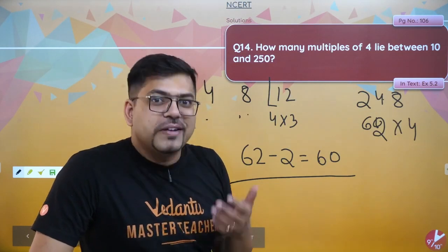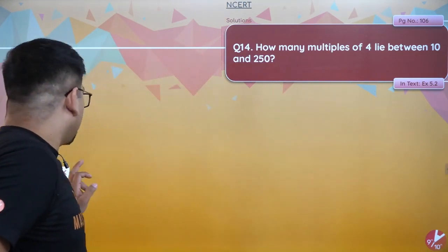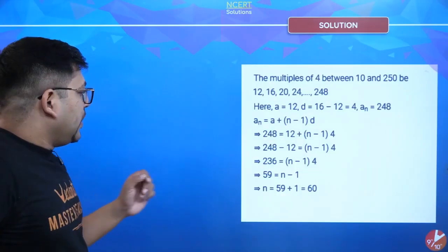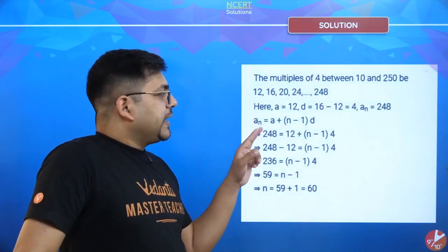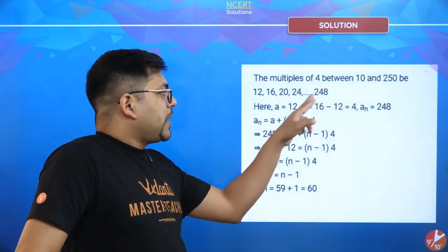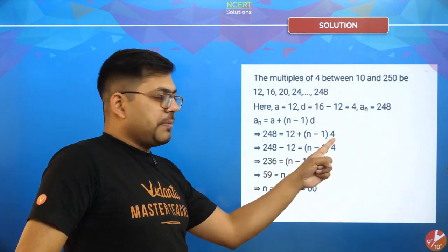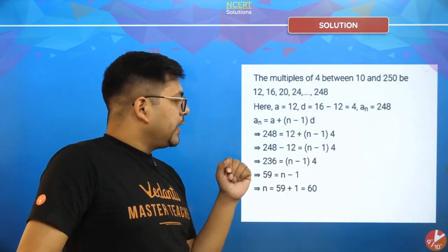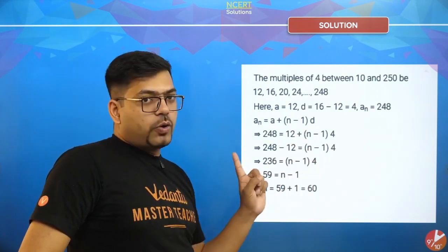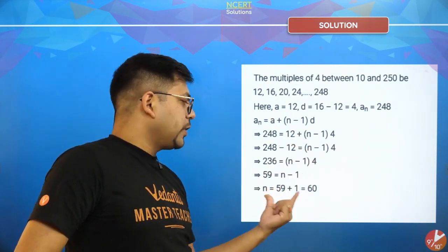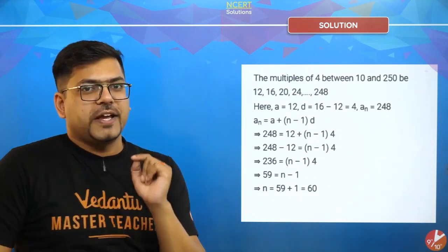Bas itna hi tha. Aapne AP lagane ki zarurat bhi nahi padi, samajh gaye? To bas solve kar do meri dost. Chaaho to aap khud bhi AP se solve kar sakte ho — same wahi tarika: last term aapka 248 hai, a + (n−1)×d kar lo, a ki value 12, d = 4, solve karo, n ki value 60 aayegi. Exactly same tarika. Check hai.